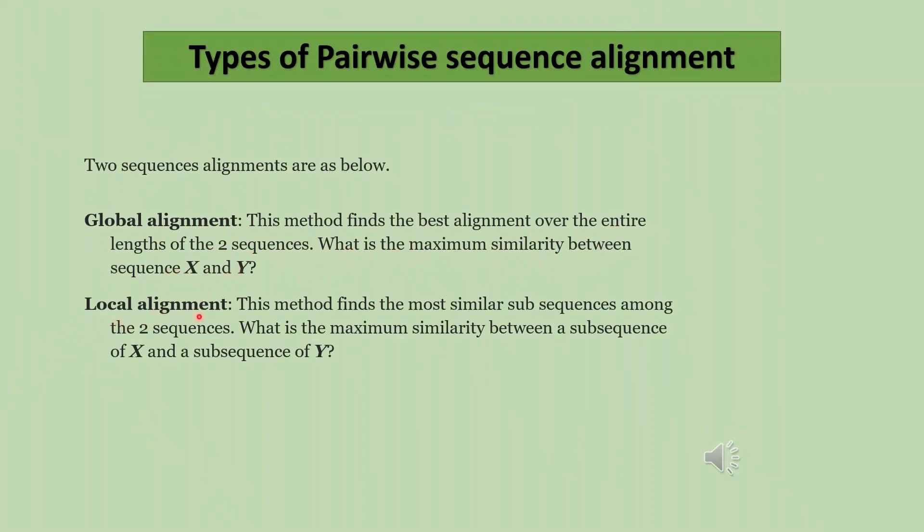2. Local alignment. This method finds the most similar sub-sequences among the two sequences. What is the maximum similarity between a sub-sequence of X and a sub-sequence of Y?